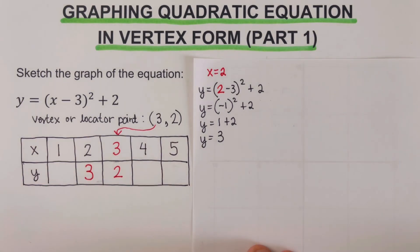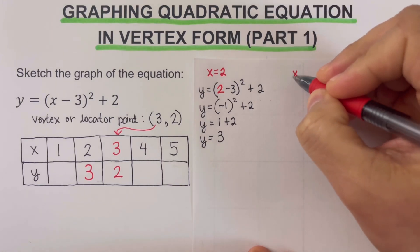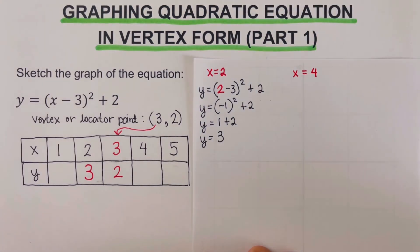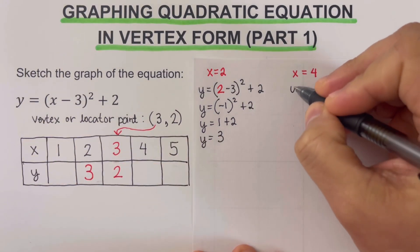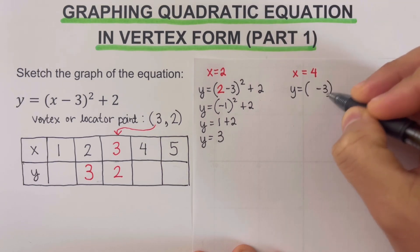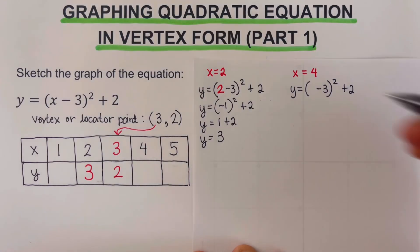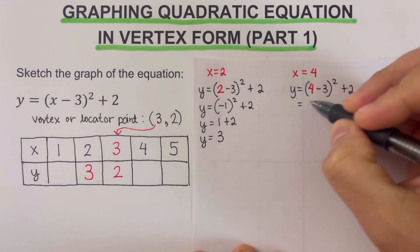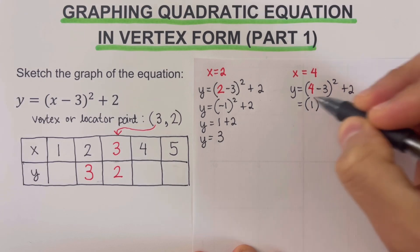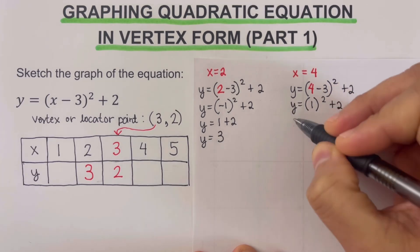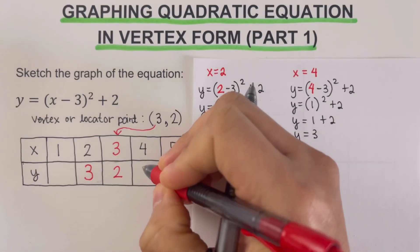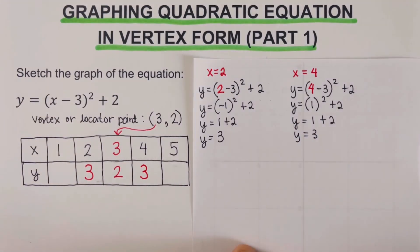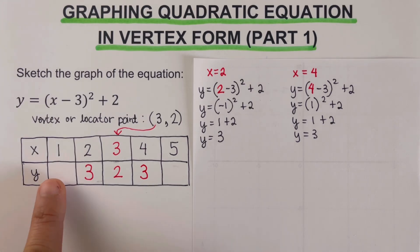Now when x equals 4: y equals the quantity 4 minus 3 squared plus 2. Four minus 3 is positive 1, and 1 squared is 1, plus 2 gives y equals 3. So when x is 4, y is also 3. The remaining y values for x equals 1 and x equals 5 are shown as well.